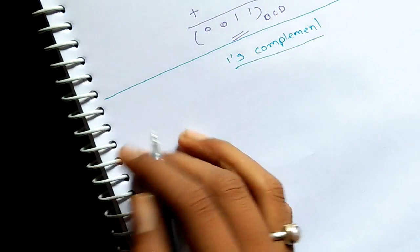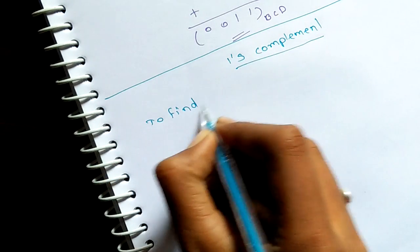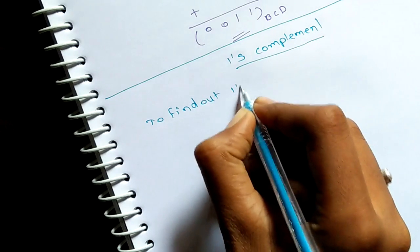First, to find out one's complement, just change all ones to zero and all zeros to one.